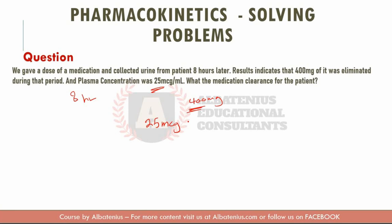To get uniform units, 25 micrograms per milliliter equals 25 milligrams per liter. They're asking for the clearance. The clearance equals the rate of elimination divided by the concentration.